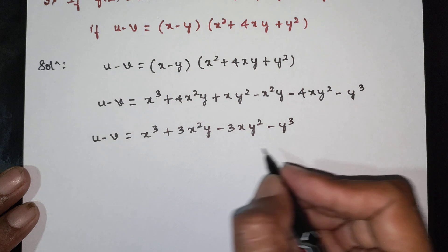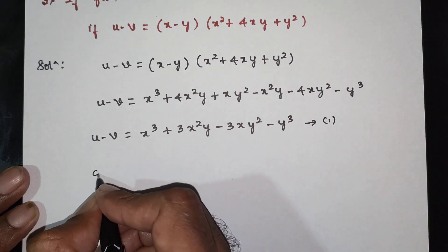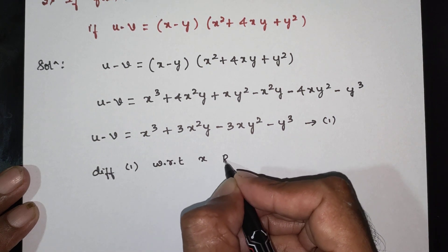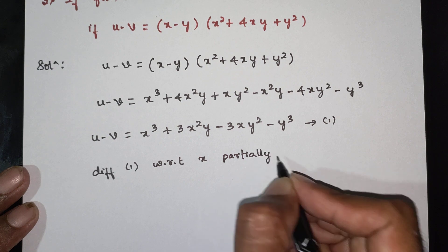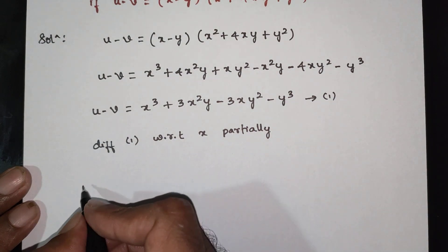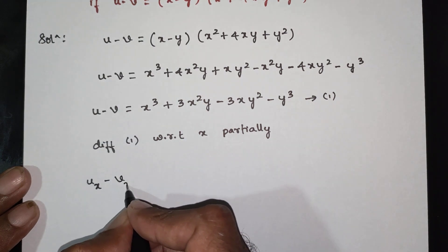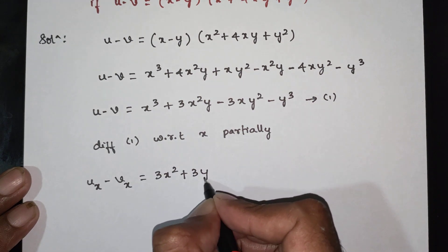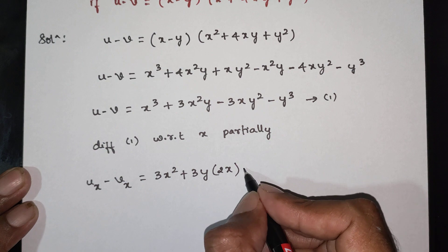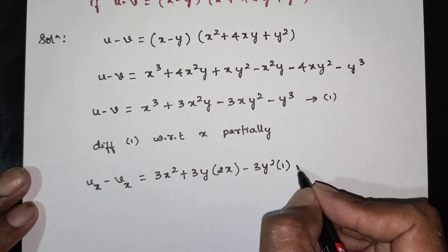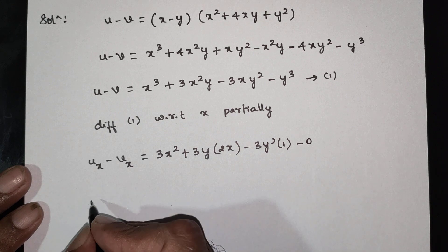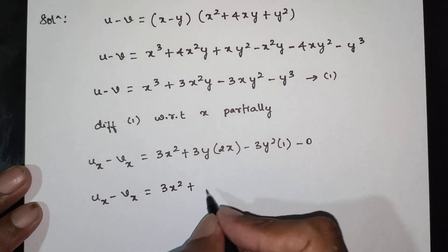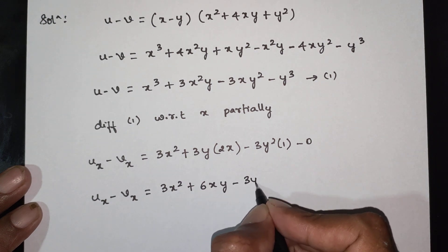Differentiating with respect to x: treating 3y as constant, differentiating x squared gives 2x, treating 3y squared as constant, differentiating x gives 1. So ux minus vx is equal to 3x squared plus 6xy minus 3y squared.